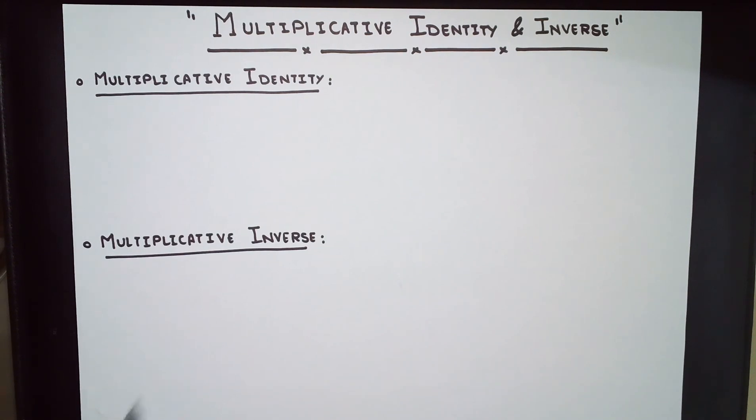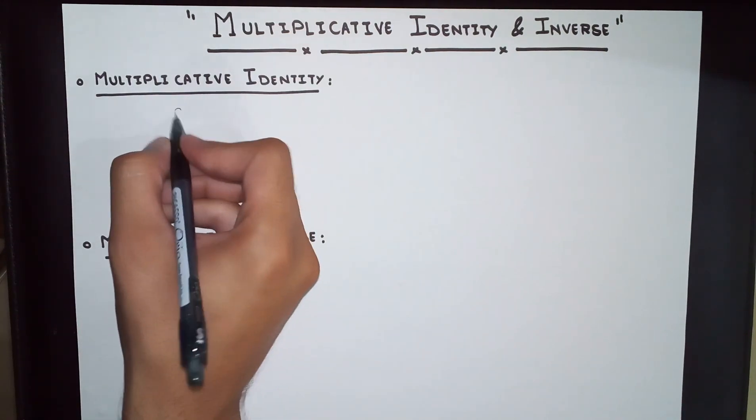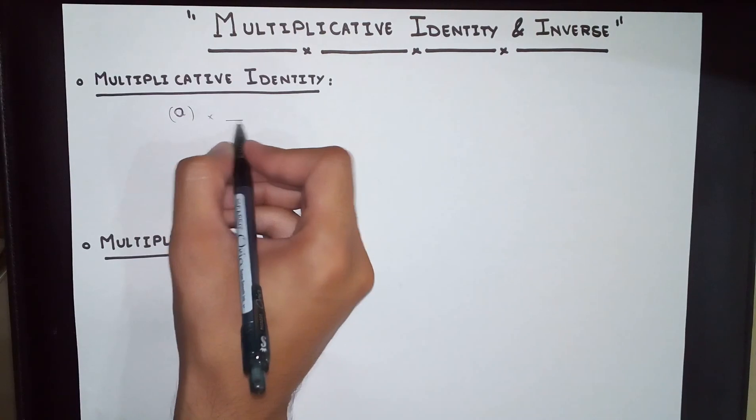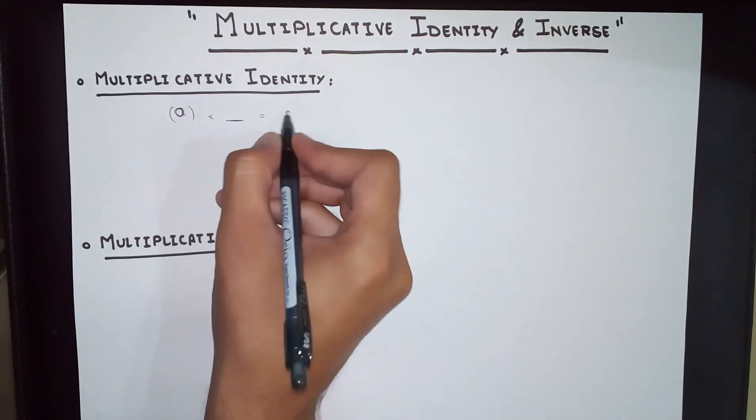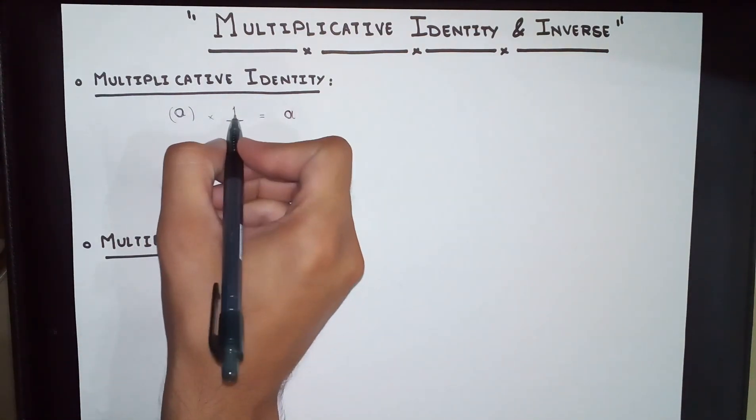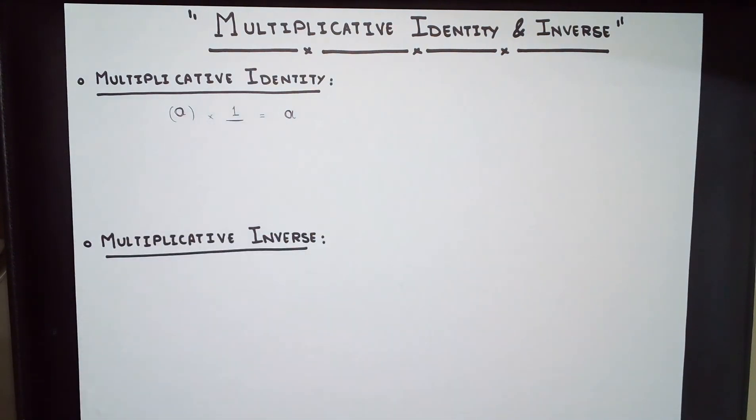This is a number with which if you multiply another number, say A, you get the same exact number. There is only one number that can do that. A multiplied by some number lets you get the same exact number A again. What can be that number? One. One is the multiplicative identity.